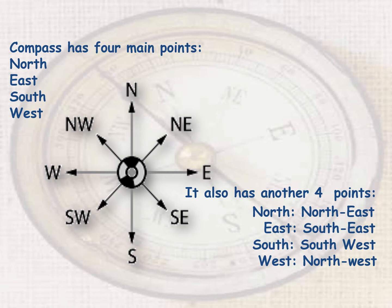Remember, to easily recall compass directions: North is above your head, East is on your left-hand side, West is on your right-hand side, and South is at your feet, at the bottom.